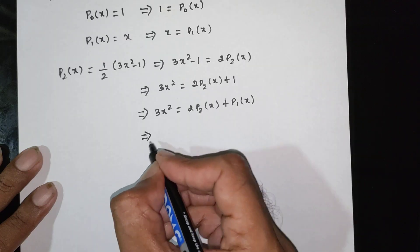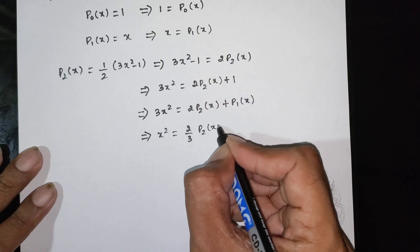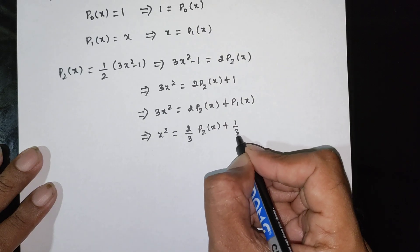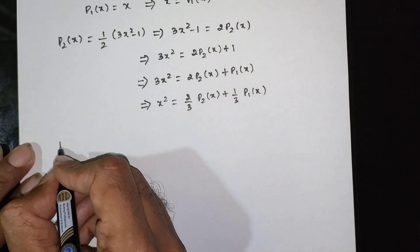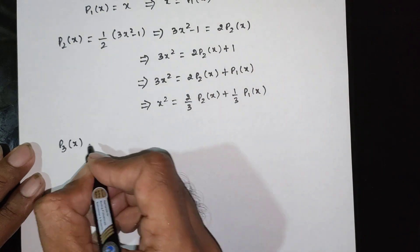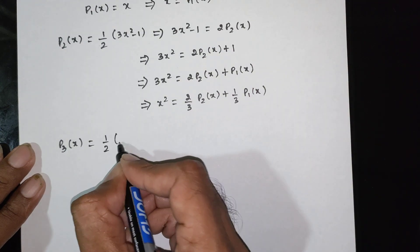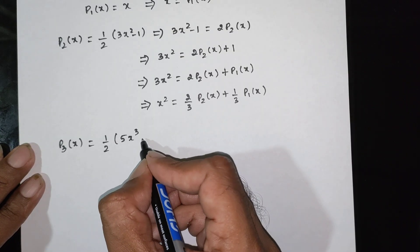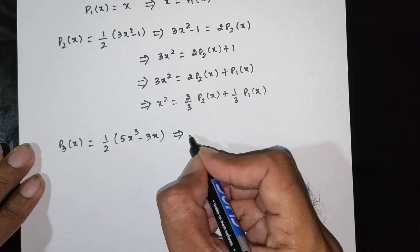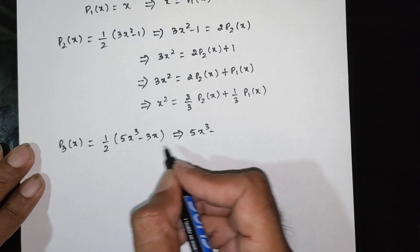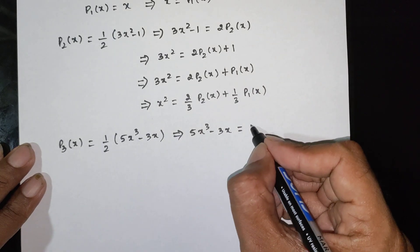Therefore x squared equals (2/3) P2 of x plus (1/3) P0 of x. For P3 of x, the formula is (1/2)(5x cubed minus 3x), so 5x cubed minus 3x equals 2 P3 of x.